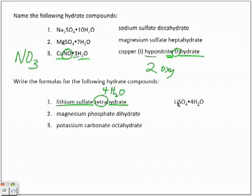Next one, magnesium phosphate dihydrate. We have two waters associated with it, and we just name the magnesium phosphate as normal. Mg3(PO4)2 and that dot separating the two molecules of water associated with them.